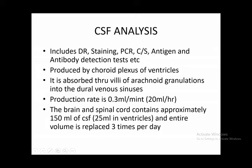CSF is produced by the choroid plexus of the ventricles and absorbed through arachnoid granulations into the dural venous sinuses. The production rate of CSF is about 0.3 ml per minute, which is around 20 ml per hour, so in 24 hours about 450 to 500 ml of CSF is produced. At any one time, only 150 ml of CSF is present in the subarachnoid space — 25 ml in ventricles, the rest in subarachnoid space and spinal canal.